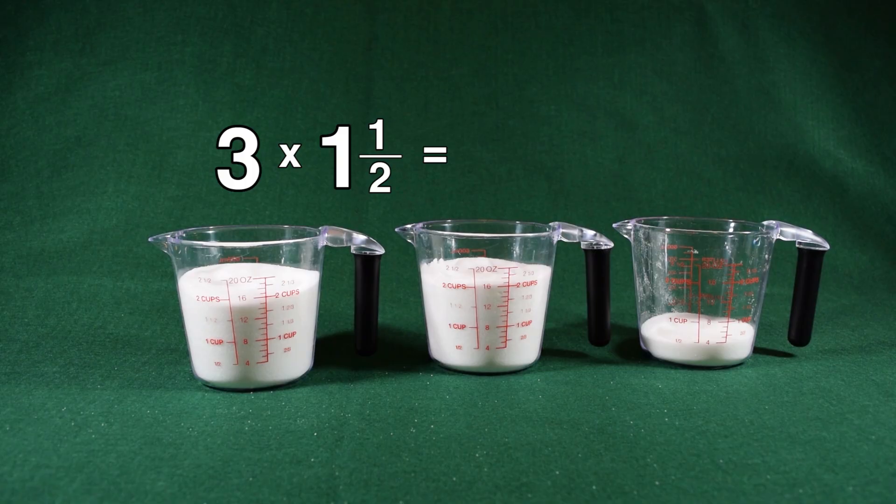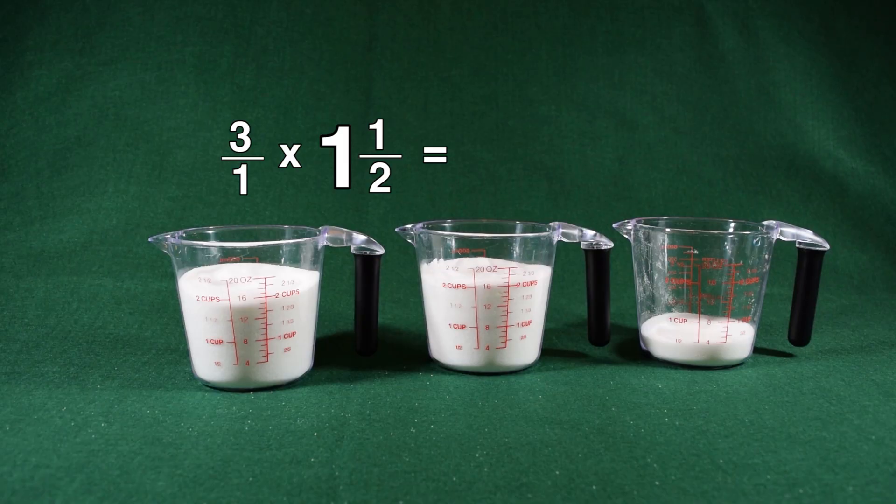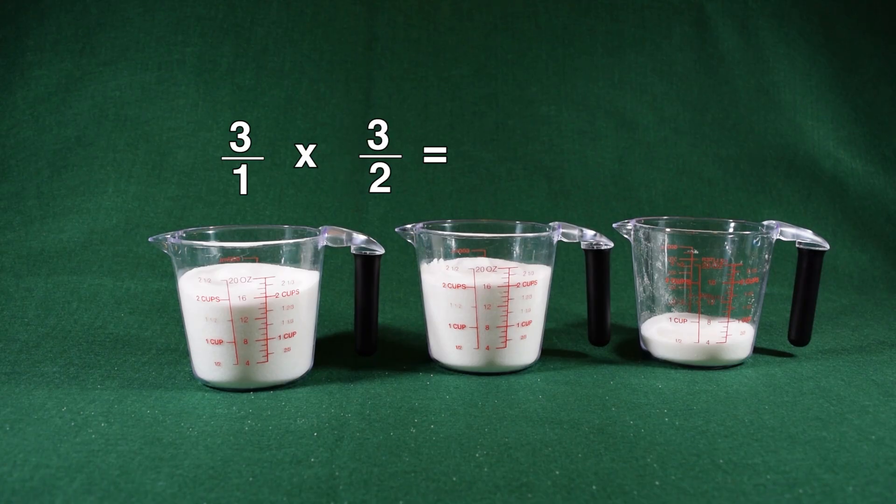So instead, we're going to change everything to an improper fraction. To multiply three by one and a half, I change three into an improper fraction by using three as my numerator and one as my denominator. That shows I have three pieces worth one whole each. I then change one and a half into an improper fraction by multiplying my denominator of two by my whole number of one, then adding my numerator of one to give me three halves.